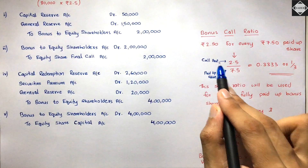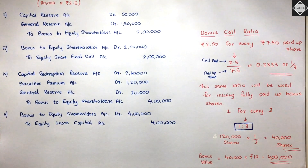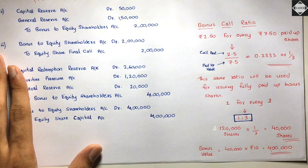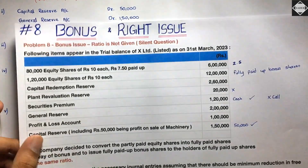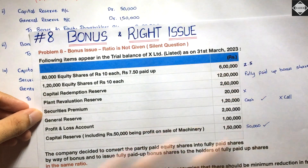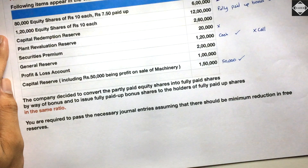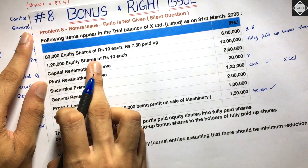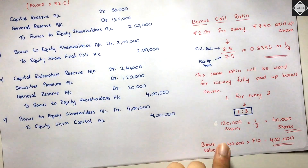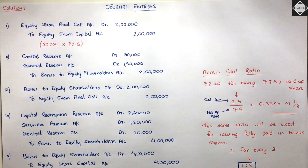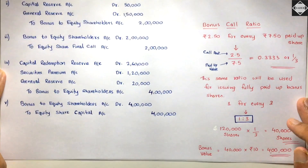Remember: the formula is call amount ÷ paid up value to get the ratio, then simplify it. Here 2.5 ÷ 7.5 = 1/3. Use that same ratio with the fully paid up class — 1,20,000 shares × 1/3 = 40,000 bonus shares. One common mistake: don't give bonus shares to both classes. Bonus call goes to partly paid up class; fully paid up bonus shares go only to the existing fully paid up class. If you have any doubts, comment below or message on Instagram. See you in the next video!